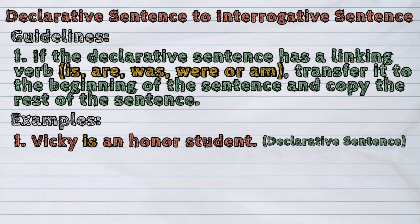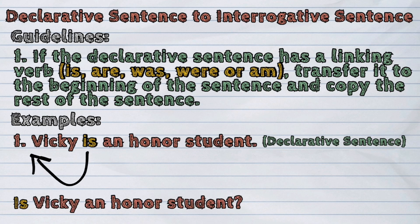For example, we will transfer the linking verb to the beginning of the sentence, and then copy the rest. The sentence will now become: Is Vicky an honors student?